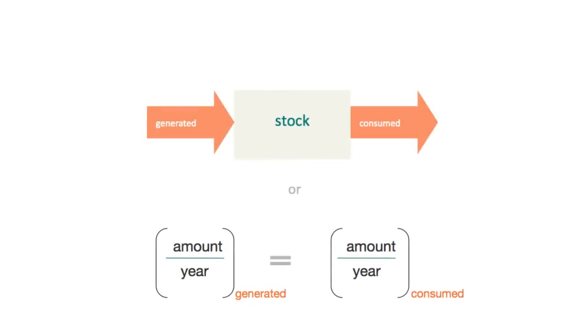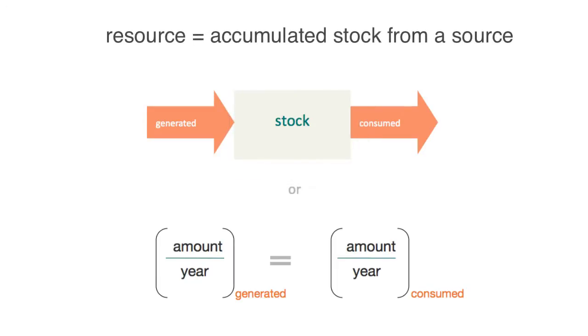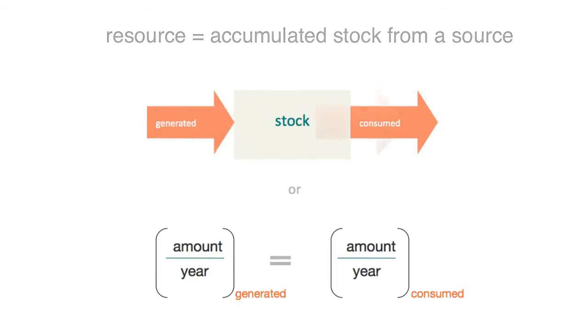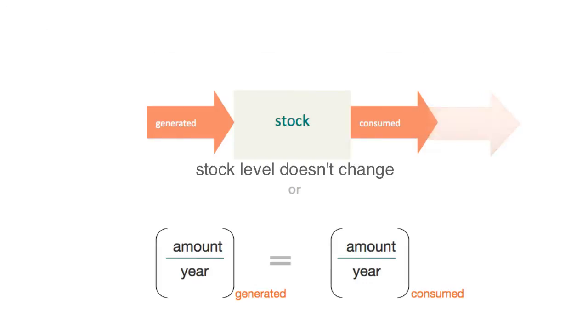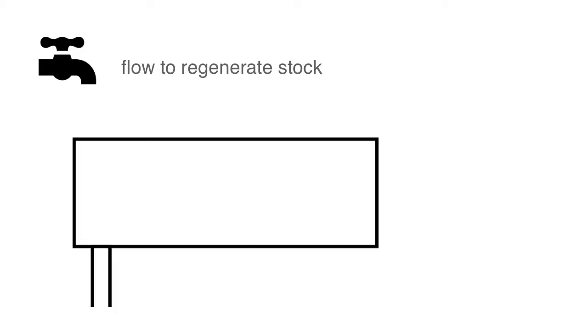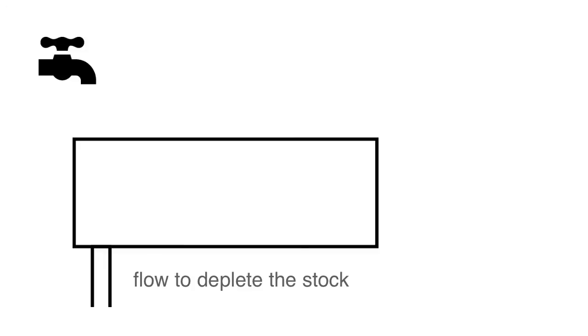A resource is an accumulated stock from a source. The stock accumulates through flows to the stock and depletes through flows from the stock. It's a lot like a bathtub: opening the faucet to fill the bathtub is the flow to the bathtub, the water in the bathtub itself is the stock of water, and the drain is depleting the bathtub.